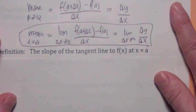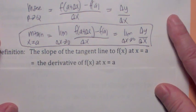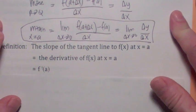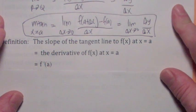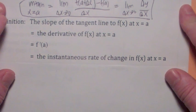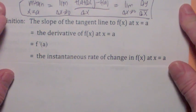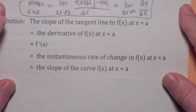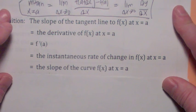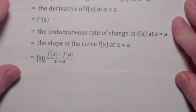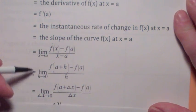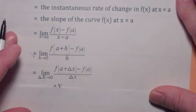Here's the definition. The slope of the tangent line to f(x) at x equal a — we also call that the derivative of f(x) at x equal a. The notation we use, a nice compact way to write it, is f prime at a. This is the derivative or the slope of the tangent line when x equals a. You could always consider that the instantaneous rate of change in f(x) at x equal a. The slope of the curve f(x) at x equal a reinforces what the slope of the tangent line means. We have these three ways to define it — actually four — and the second one is the way we're going to talk about it the most.